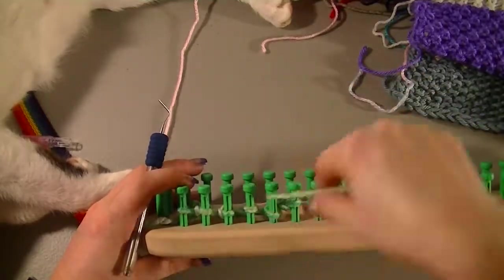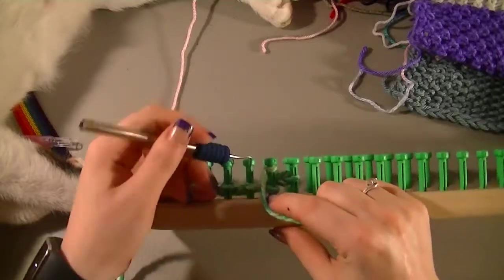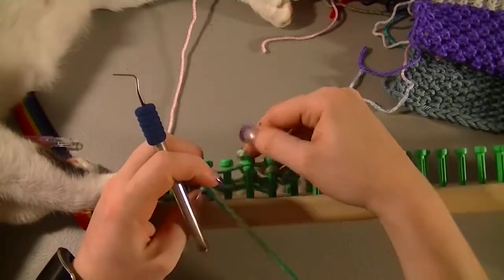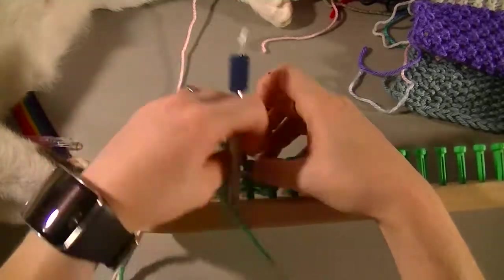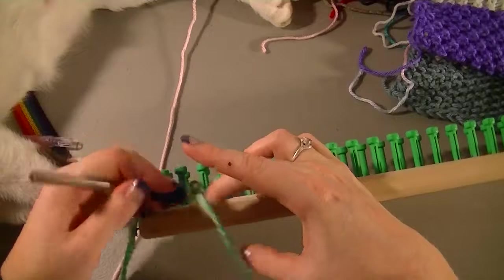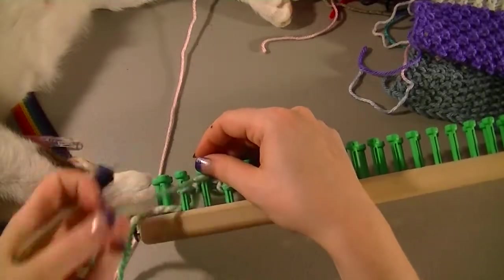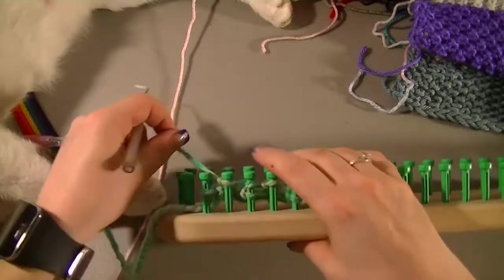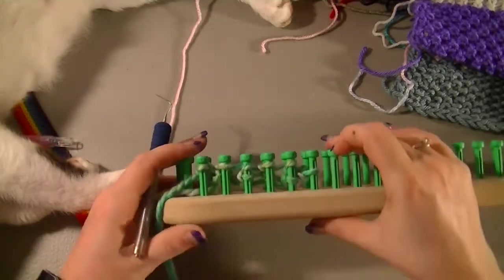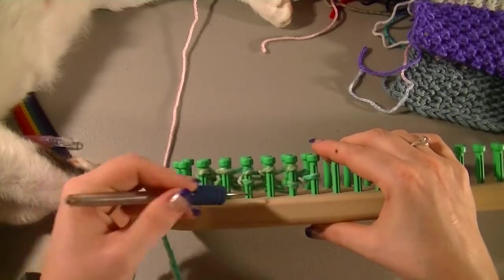Row two would be the same, so you would do the exact same stitches. It's kind of an awkward angle. Okay, and your last would be an e-wrap. So row one and two are the same, which is e-wrap, purl, e-wrap, purl.